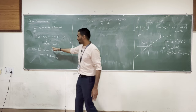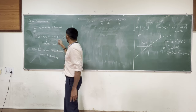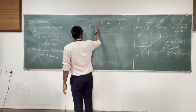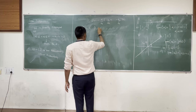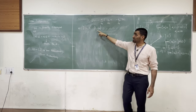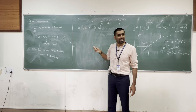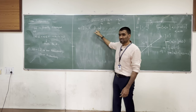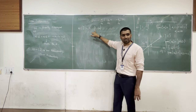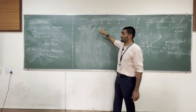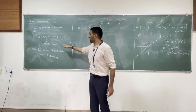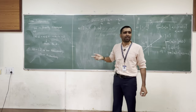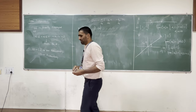Another consequence: if W contains a zero element, the set is always linearly dependent. Because you could choose all alphas to be zero except for the alpha corresponding to the zero vector - you can choose that to be any non-zero number and still produce the zero vector. So a set containing the zero element is never linearly independent.